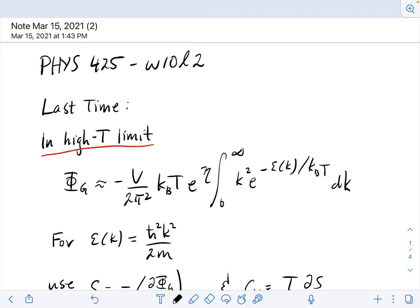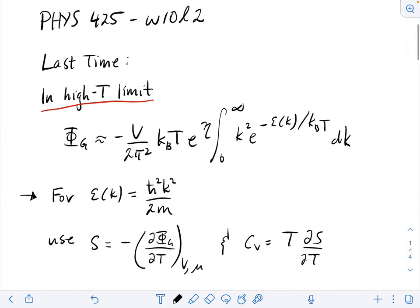We calculated this grand potential in both the high temperature and low temperature limits. What I have here is the approximate expression for the high temperature limit, and this can be evaluated if we pick a specific k dependence for the energy. For non-interacting particles, that energy dependence is h-bar squared k squared over 2m. If you sub that in and evaluate the integral, we can calculate the grand potential and take its temperature derivative to find the entropy.